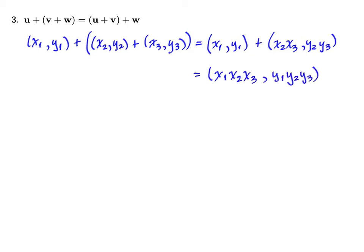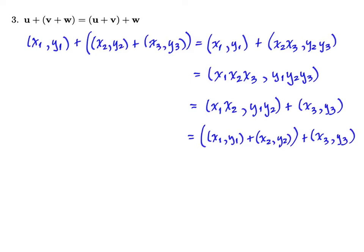So I get (x₁, y₁) plus the vector (x₂x₃, y₂y₃). And when I do that, according to my new addition operation, I get this ordered pair. And I can separate it out into this ordered pair (x₁, y₁) plus the ordered pair (x₃, y₃). And then the first ordered pair is the sum of (x₁, y₁) and (x₂, y₂). So I've just shown that the new addition operation is, in fact, associative. So the third axiom holds.